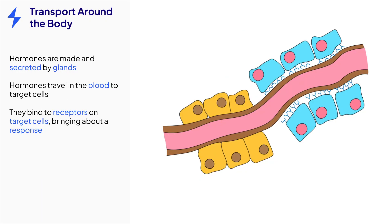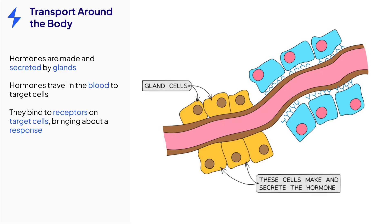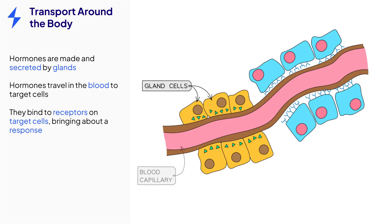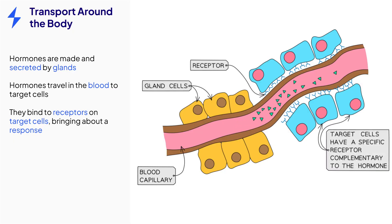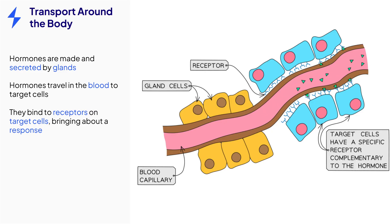The hormones are synthesized in the cells of the gland. On this diagram, the gland is represented by the yellow cells and the hormone by the green triangles. Once the hormones have been synthesized, they are secreted into the blood and travel through the circulatory system until they meet their target cells. The target cells have protein receptors on the outside that can bind to the hormone, in a similar way to how enzymes and substrates bind in the lock and key model.